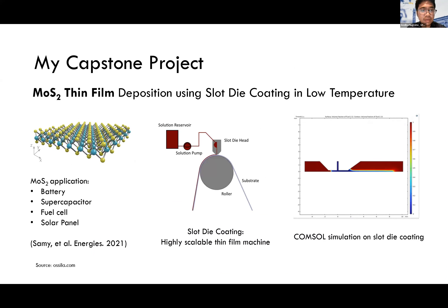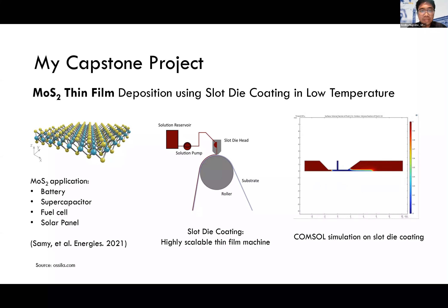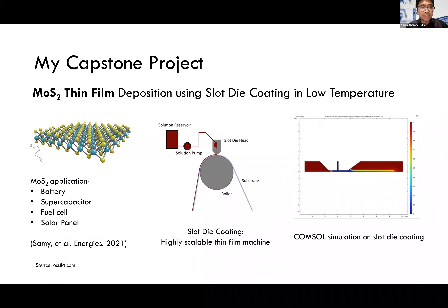This is my capstone project — it's about molybdenum disulfide (MoS₂) thin film deposition using slot-die coating at low temperature. MoS₂ itself is a transition metal dichalcogenide semiconductor. There are many applications of MoS₂ like batteries, supercapacitors, fuel cells, and solar panels. My focus is not on MoS₂ synthesis but more on making it available for scale-up in industry. In the middle part you can see the schematic of slot-die coating.